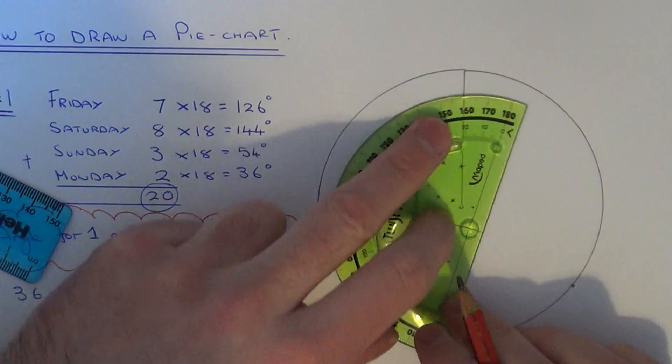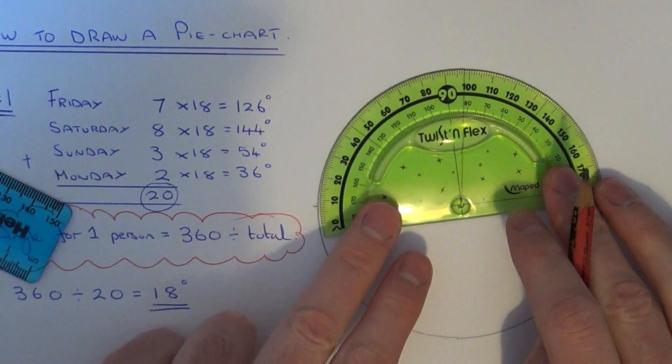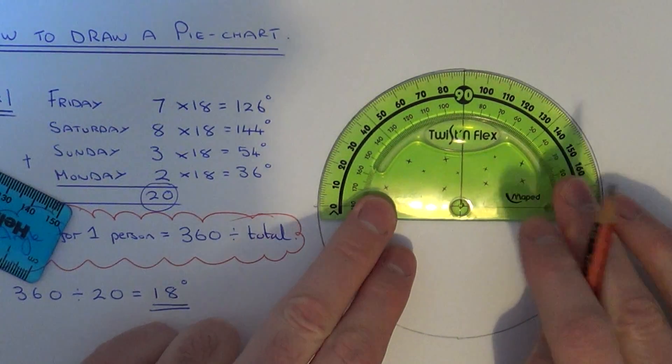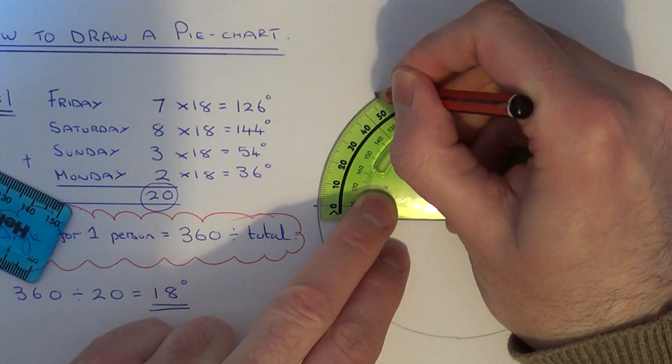So again turn your protractor around and the next angle is 54. Again put a little marker there.